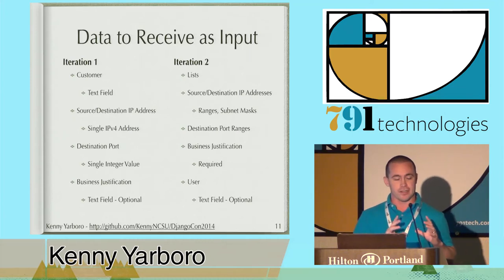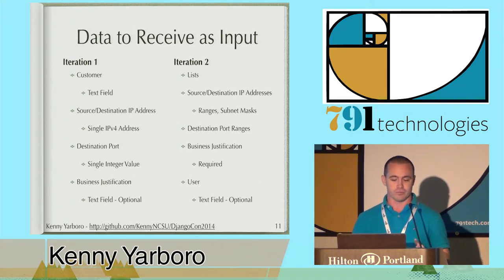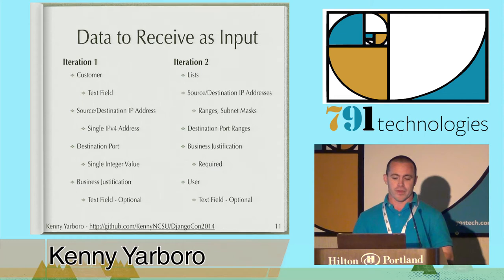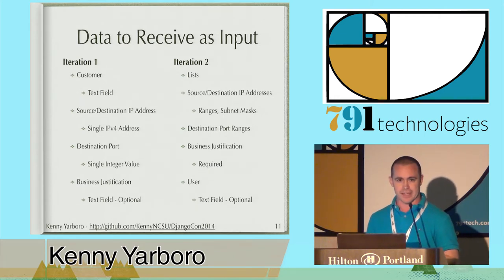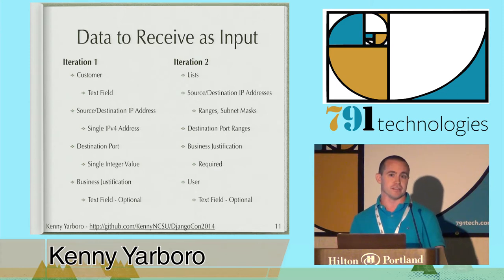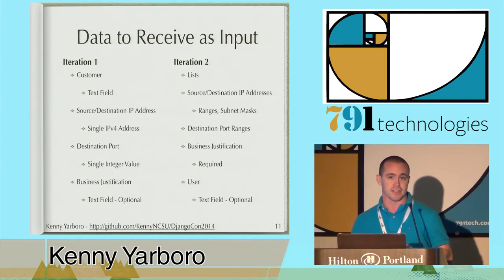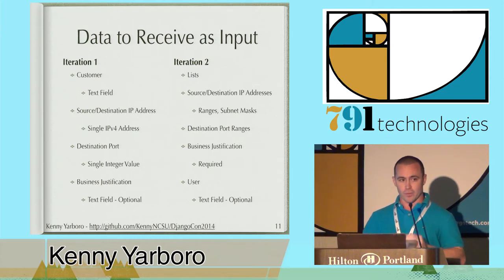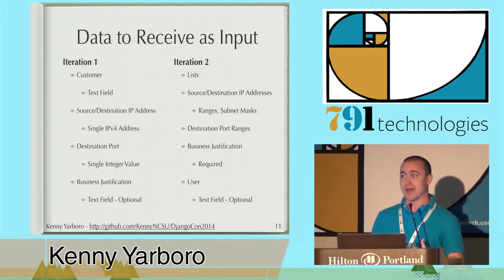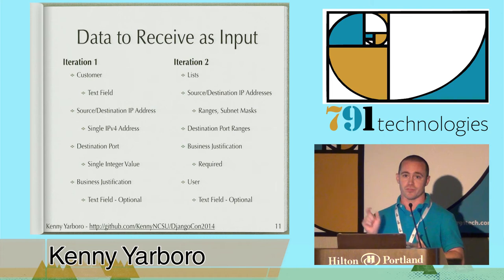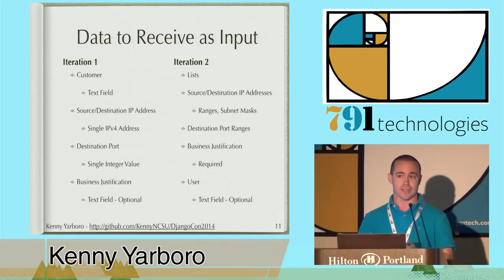In iteration one we built our own web form using Bootstrap.js as our self-service portal, but in iteration two, one of the company standard IT groups — called IT Change — provided our front end. IT Change had its own user account appropriately named IT Change. So if our view was called, we could identify it as IT Change calling us. We have to keep a record of every firewall change we actually make and tie that back to a user, so IT Change has to provide us with a user value so we know who actually submitted the request.